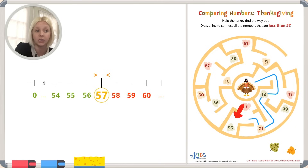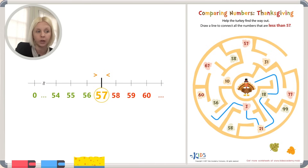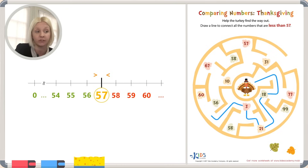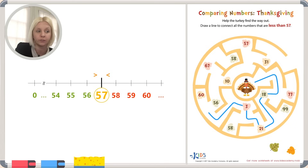Now we can either go to 58 or to 3. Which one is less than 57? Don't get confused here — 3 is less than 57. 58 is on this side of the number line; we don't want to go that way. So we're going to go up to 3. And then we've got a couple of choices: we can either go to 60 or 56. Which one is going to be less than 57? 56 is less than 57 — it's even on our number line that we drew. 60 is greater than. So we're going to go to 56.